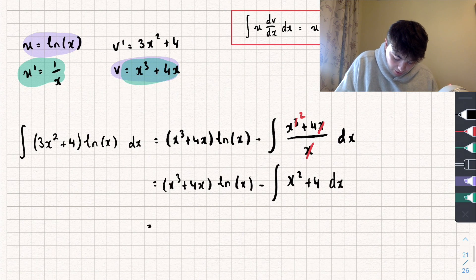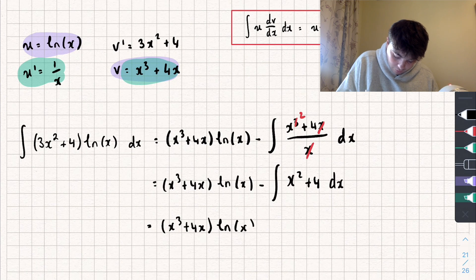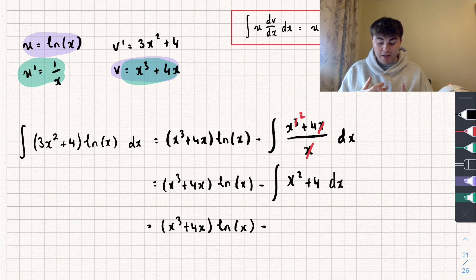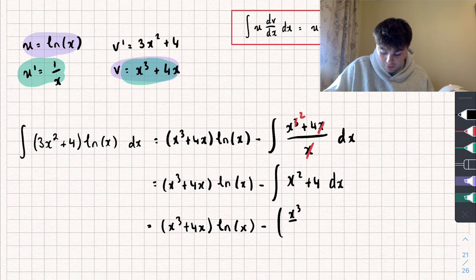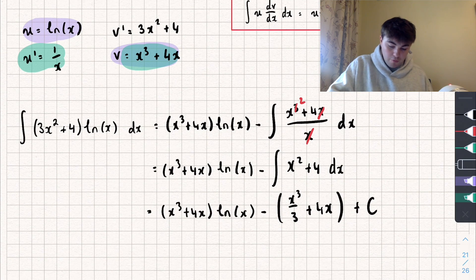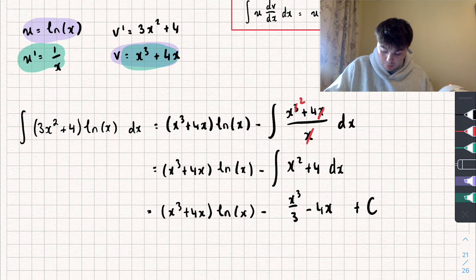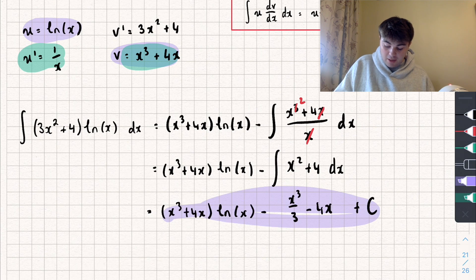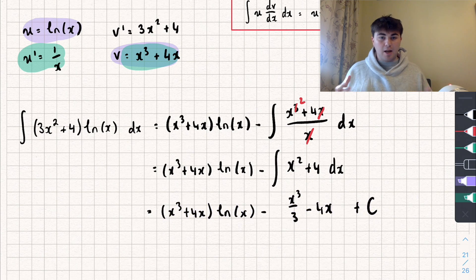Integrating that, we get x cubed plus 4x multiplied by the natural log of x, subtract x cubed divided by 3 plus 4x, plus the constant of integration c. Removing those brackets gives us negative x cubed divided by 3, subtract 4x, plus c — and this is our answer for the first example, so that's not too bad.